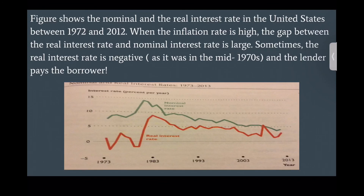A figure shows the nominal and the real interest rate in the United States between 1972 and 2012. When the inflation rate is high, the gap between the real interest rate and the nominal interest rate is large. Sometimes the real interest rate is negative, as it was in the mid-1970s, meaning the lender effectively pays the borrower.